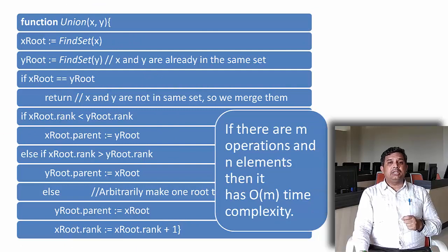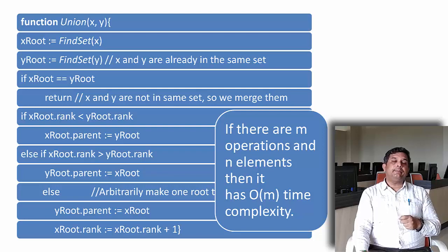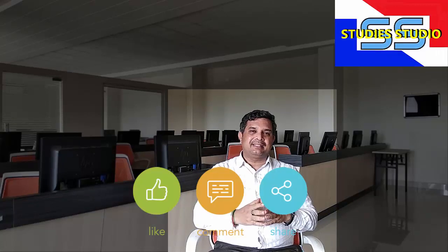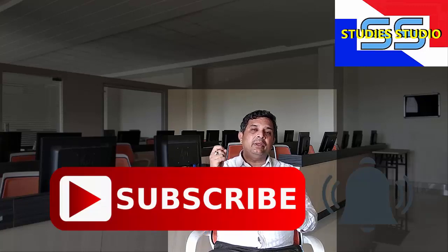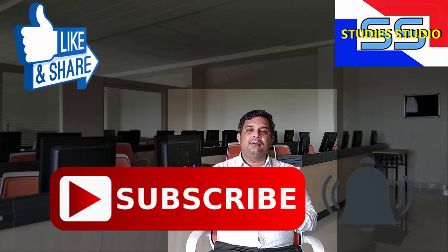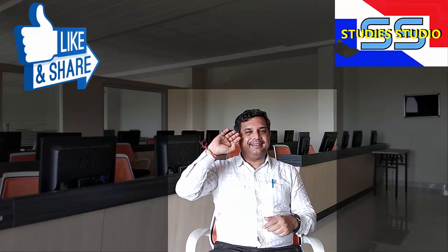The complexity will be O(M) if there are M operations on N elements. I hope you understood what is disjoint set data structure, how to represent it, and what operations we perform. If you understood, give a like and share among your friends. In our next video, we are going to discuss about its application. See you then. Take care. Bye.